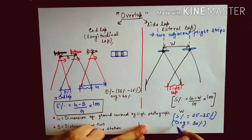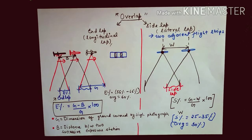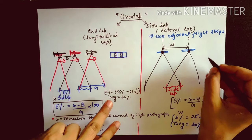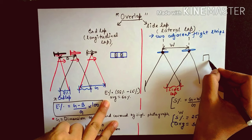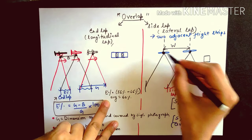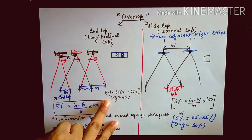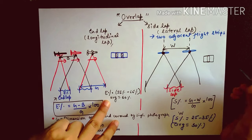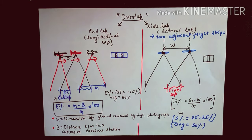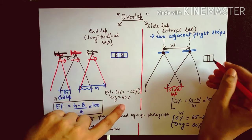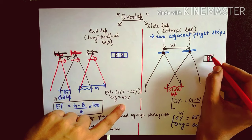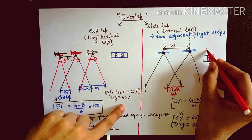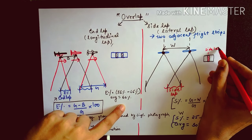In the photograph diagram, the first photo is captured by one aircraft position and the second photo is captured by the next station. The side lap between these two adjacent strips is visible in this diagram.